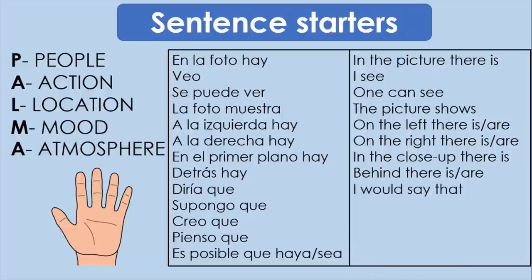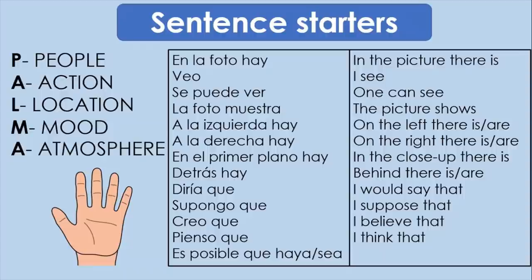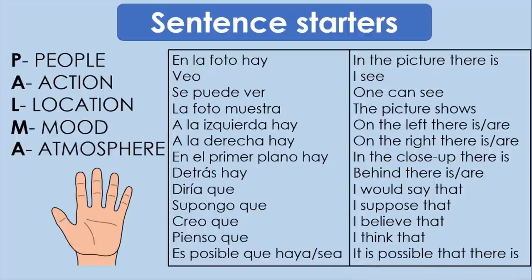'Diría que' means 'I would say that'. 'Supongo que' means 'I suppose that'. 'Creo que' means 'I believe that'. 'Pienso que' means 'I think that'. Both creo and pienso translate as 'I think', but creo is when you think and believe something, while pienso is when it's going through your mind and you question yourself. And 'es posible que haya o sea' translates as 'it's possible that there is'.